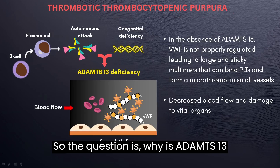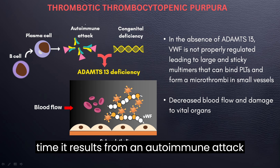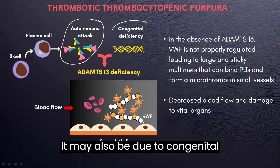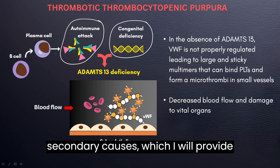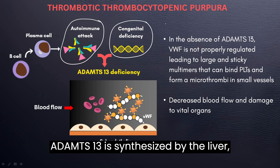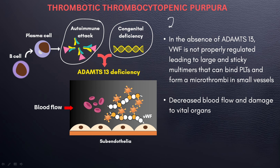So why is ADAMTS13 deficient or absent? The majority of the time it results from an autoimmune attack on ADAMTS13. It may also be due to congenital deficiency, or secondary causes. For example, ADAMTS13 is synthesized by the liver, so in the case of liver failure, this may lead to a secondary cause of TTP.